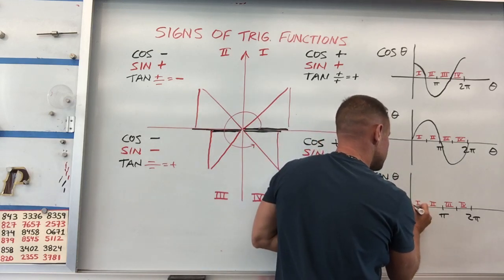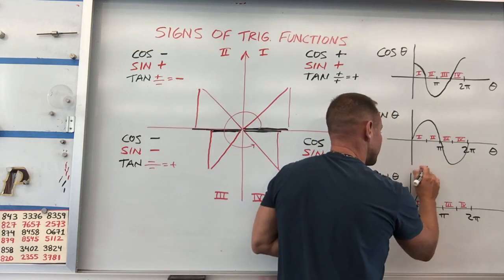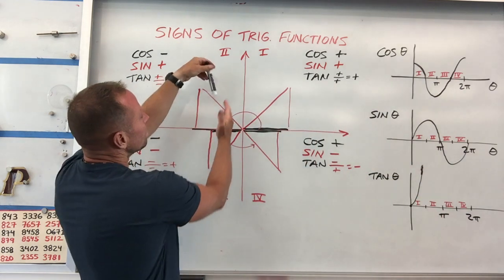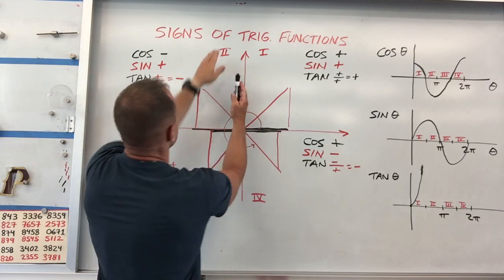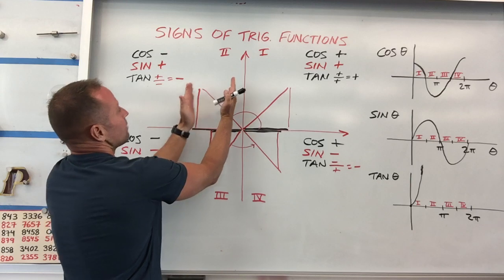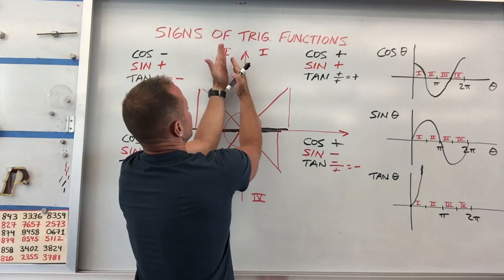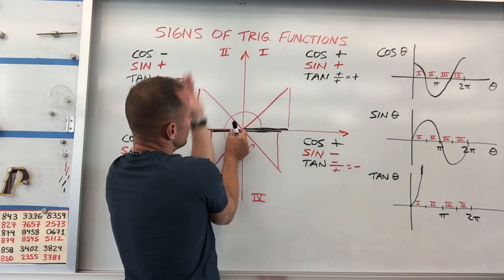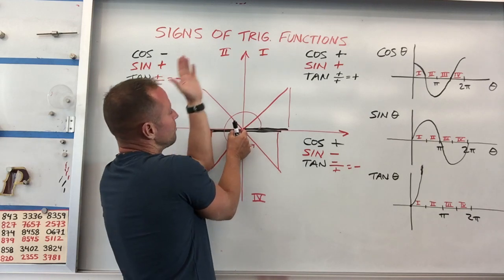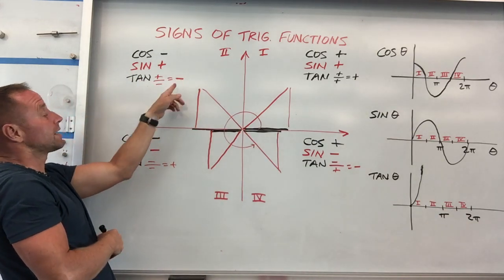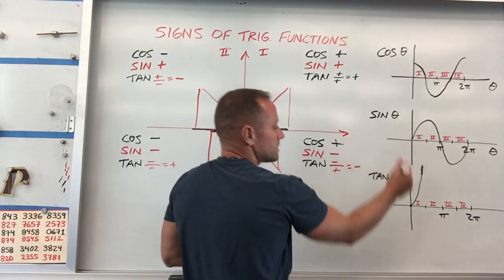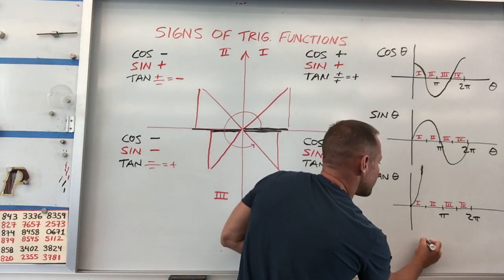So your tangent function is really going to take off here like this, heading for positive infinity. And when you get over to this side, it's like opposite over adjacent. So your opposite side will be this big positive thing over the adjacent, which would be a very small negative thing. So big positive over small negative will give you big negative. So your tangent is going to start coming back from here.